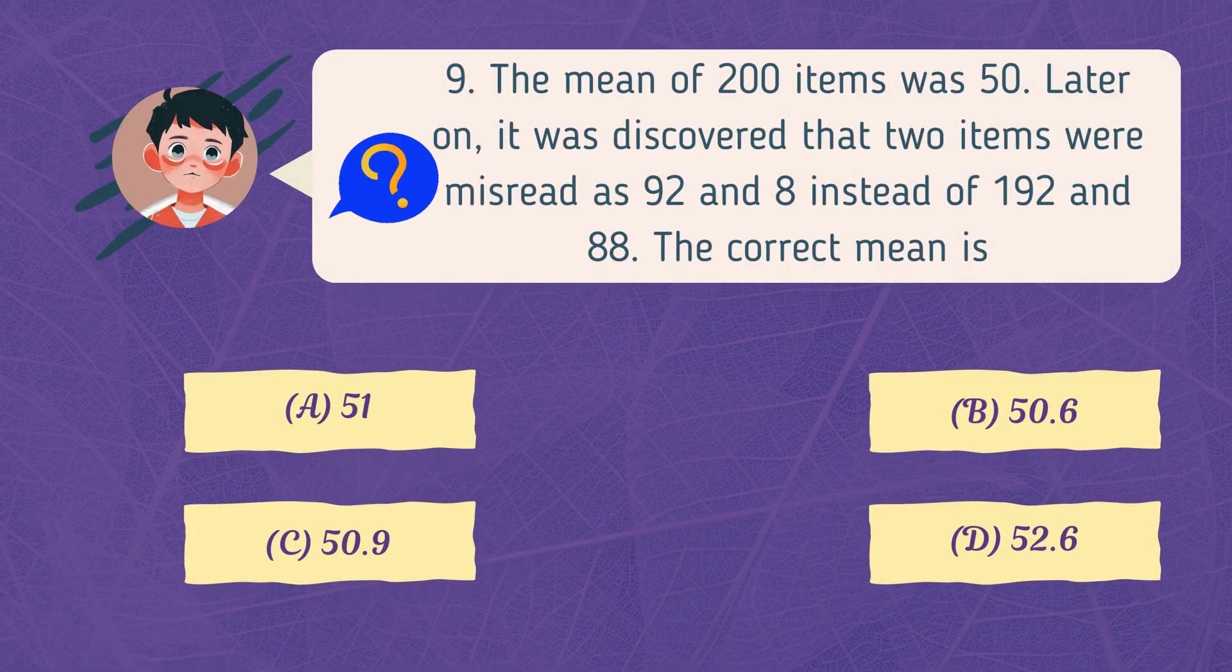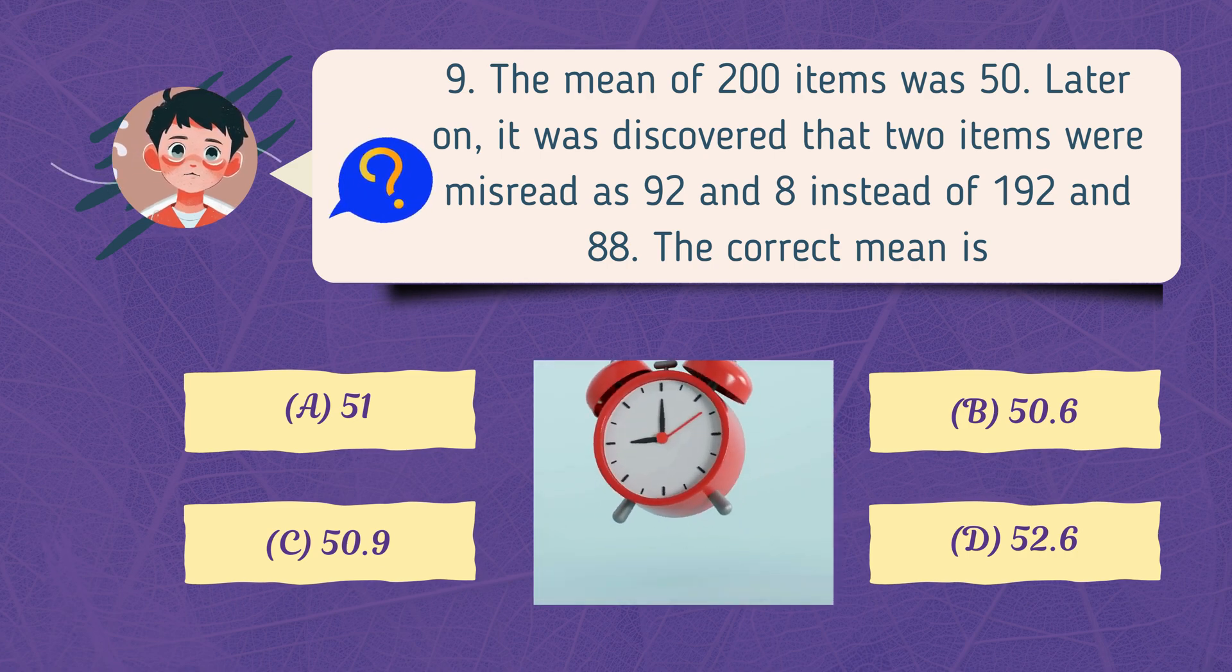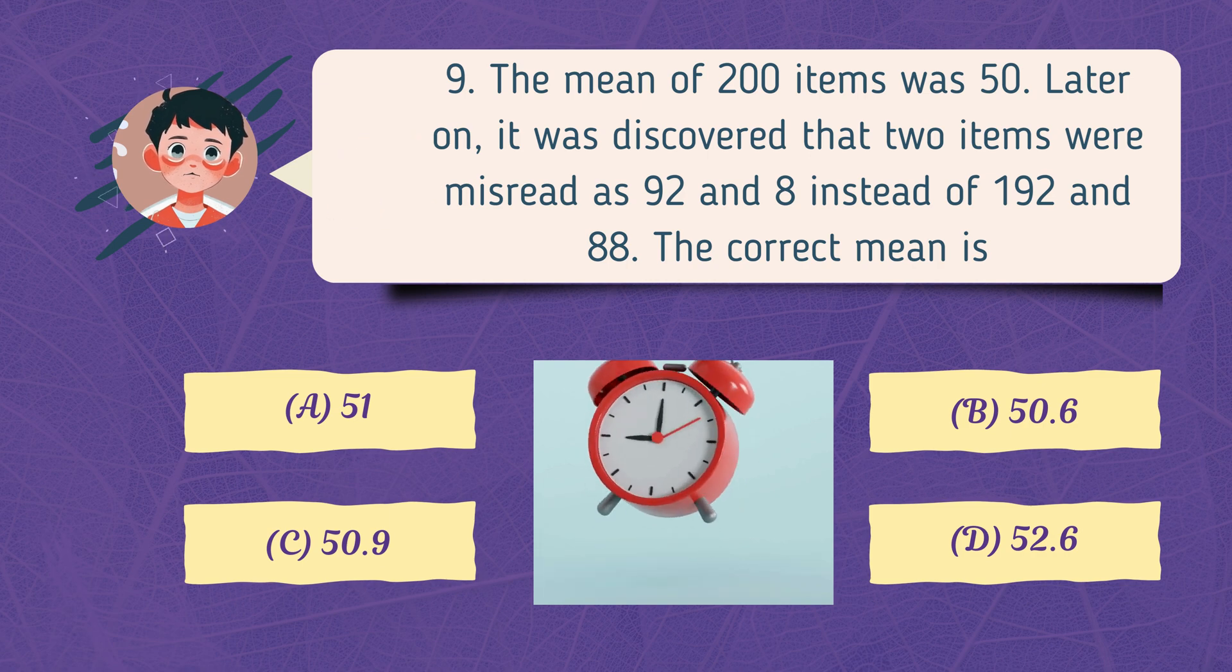The mean of 200 items was 50. Later on, it was discovered that two items were misread as 92 and 8 instead of 192 and 88. The correct mean is?